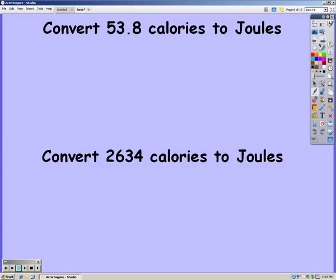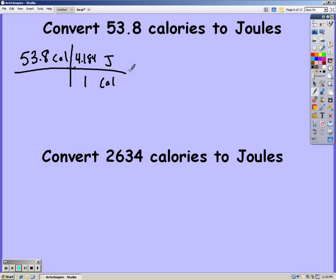To convert 53.8 calories to joules, you're going to start with what you're given. Just like before, what's given is on the bottom. To cancel the unit, what you're looking for is on top. Then we're going to plug in that conversion we just saw. One calorie is 4.184 joules. Multiplying that, you get 225 joules.